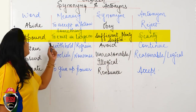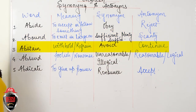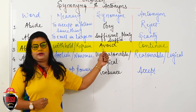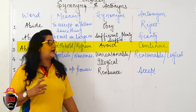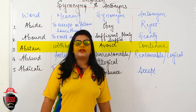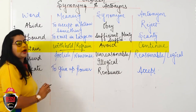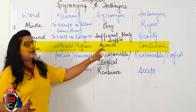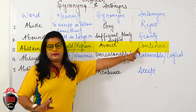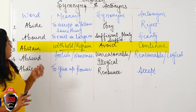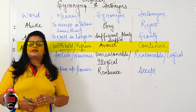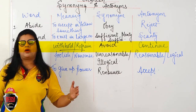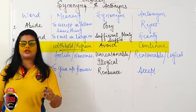Third word: Abstain. Abstain means to withhold, refrain, control — rok ke rakhna, jane nahi dena, avoid karna. Synonyms: Discontinue, Avoid, Control. Antonym: Continue.